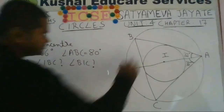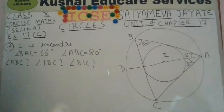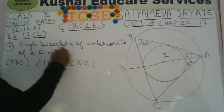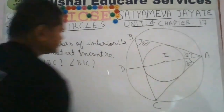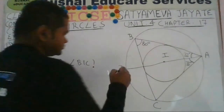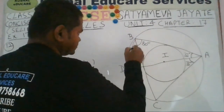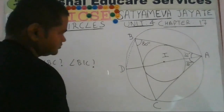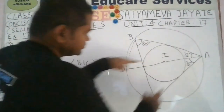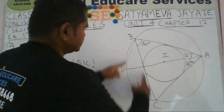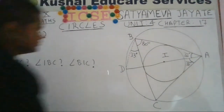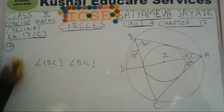Angle ABC is given as 80 degrees, and we have to find angle DBC. In order to calculate angle DBC, first we should join points B and D so that we can see the angle DBC. Now look at arc CD — it subtends an angle of 33 degrees at vertex A. Since the angles in the same segment are equal, arc CD will also subtend 33 degrees at vertex B. In other words, angle DBC will also be 33 degrees.